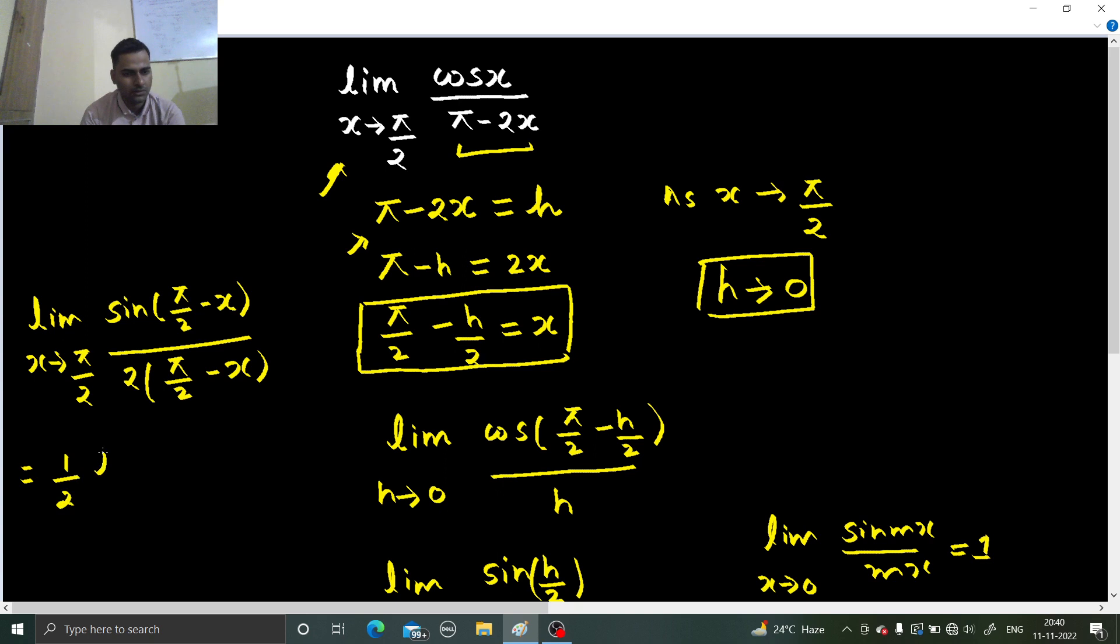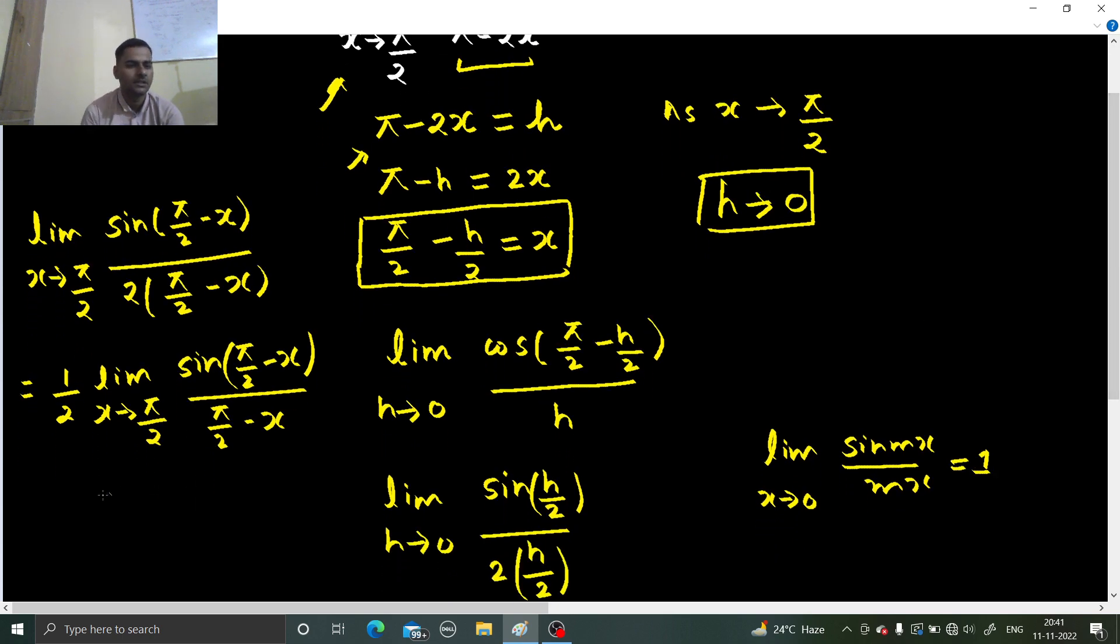1 by 2 limit x tending to pi by 2 sin pi by 2 minus x. This will give you 1. So you again get half as your answer. So this is another method to solve this.